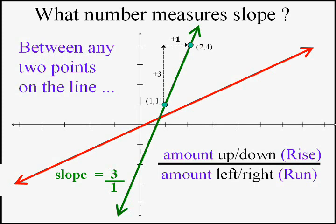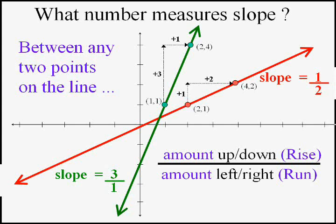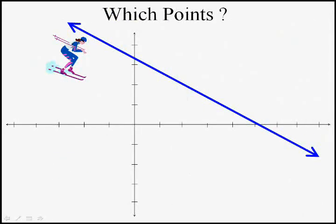The slope of this line — I'll pick any two points — is not quite as high as three. I went up one for every two I went over, so the slope is in fact one-half or 0.5. Now this line should certainly have a negative slope — it's going downhill. If I pick these two points, the rise would really be a fall, the run would be three, and the slope would be negative two-thirds.